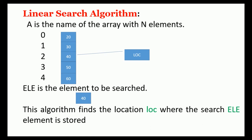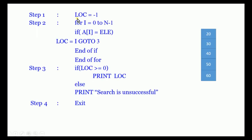Now we write the linear search algorithm. Step 1: loc = -1 (null is represented by -1). Step 2: for i = 0 to n-1 (upper bound minus one). If n is 5, then n-1 is 4, giving indices 0, 1, 2, 3, 4 — five elements where the last is represented by 4 since the first starts at 0.